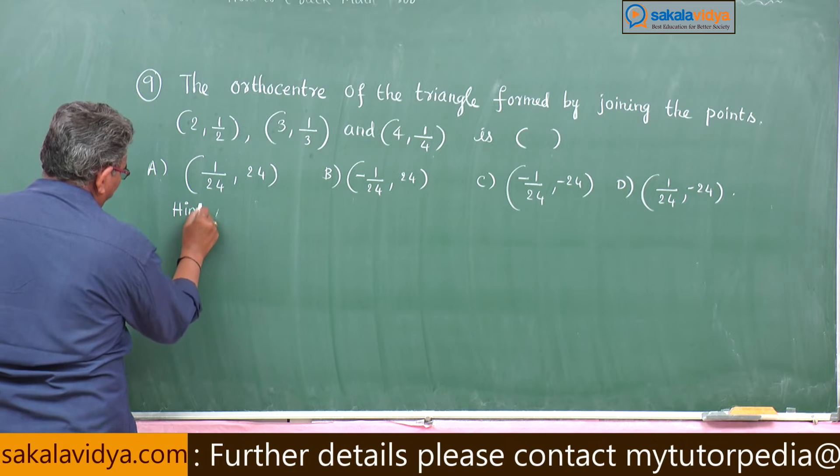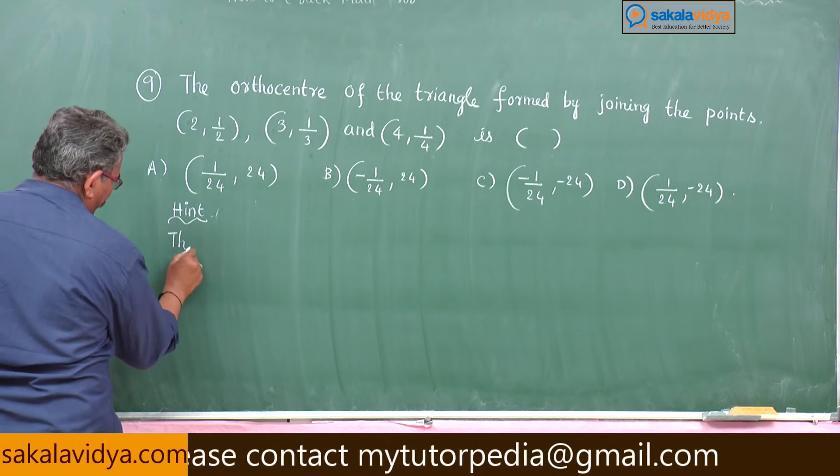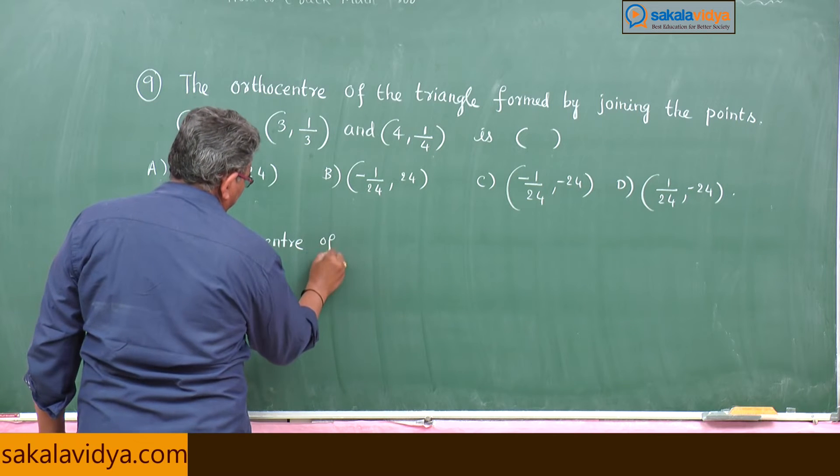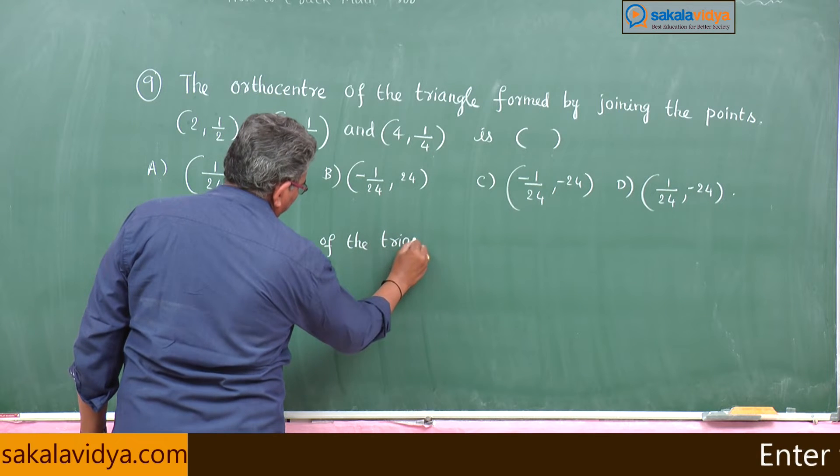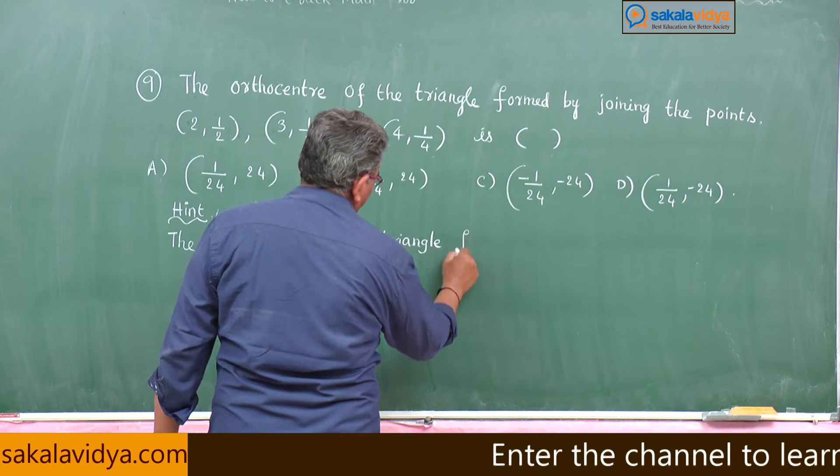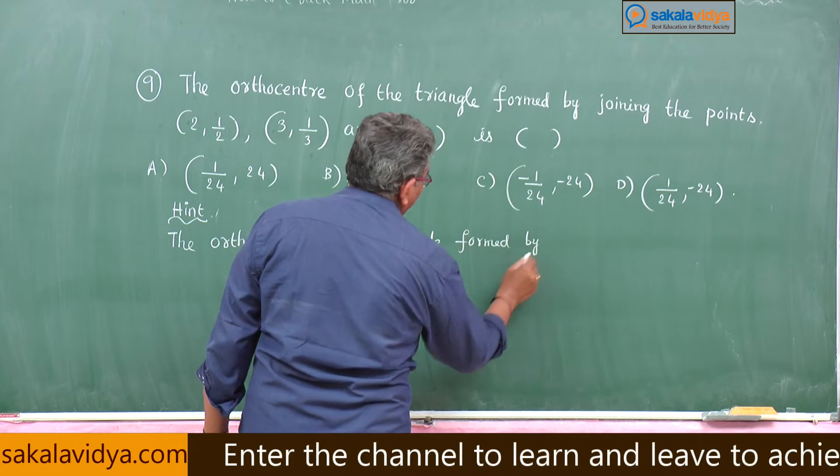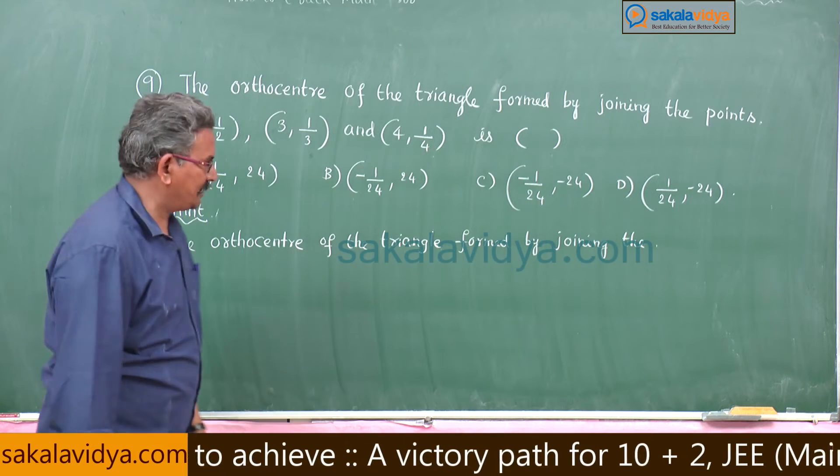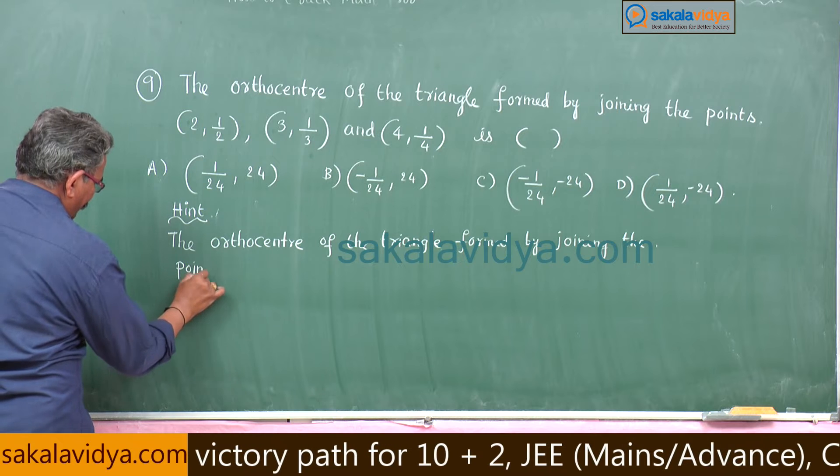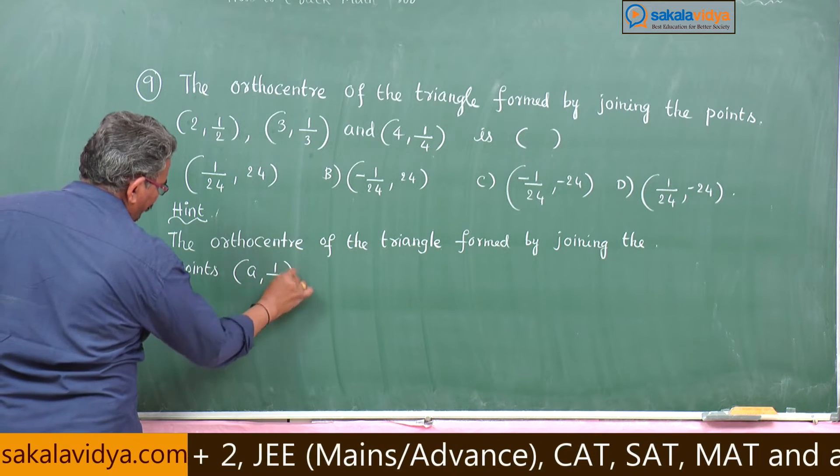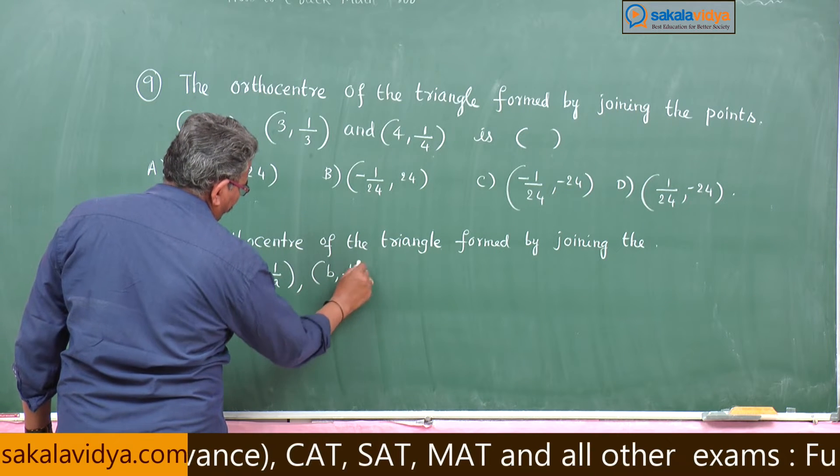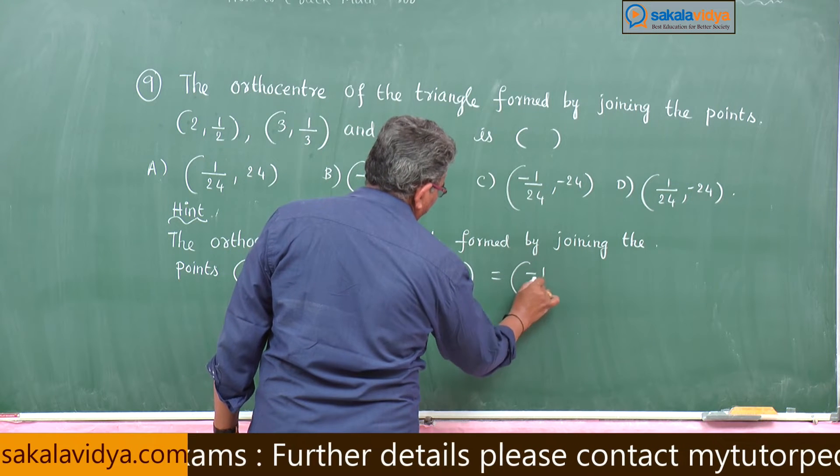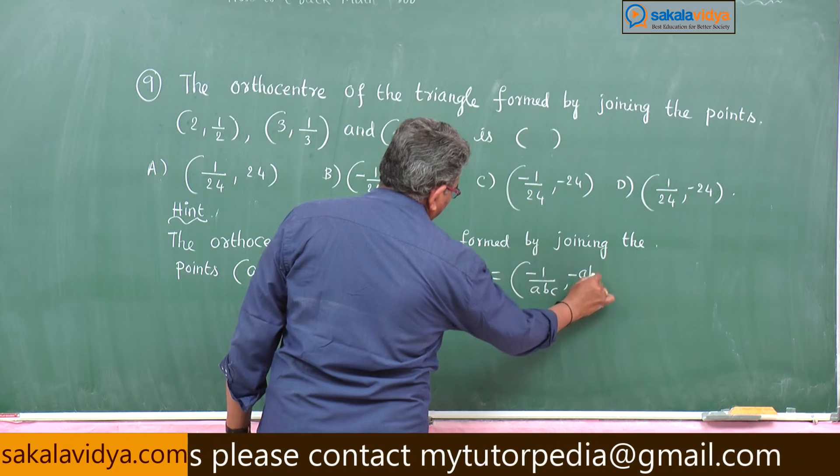Hint: the orthocenter of the triangle formed by joining the points a comma 1 by a, b comma 1 by b, and c comma 1 by c is equal to minus 1 by a into b into c comma minus abc, I already told you.